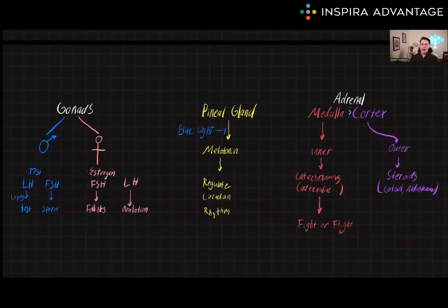Today, we're going to talk about another set of high-yield topics on the MCAT: gonads, the pineal gland, the adrenal medulla, and the adrenal cortex. These topics are essential for understanding the physiological mechanisms that regulate the endocrine system, which plays a crucial role in maintaining homeostasis and overall health.